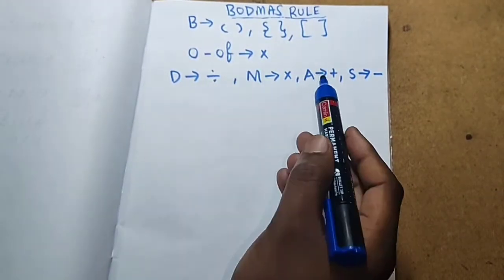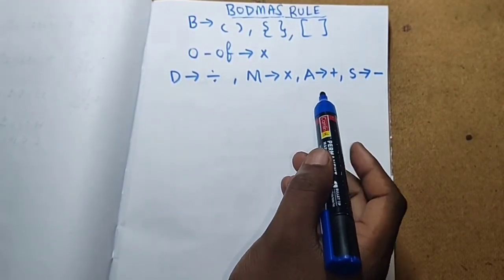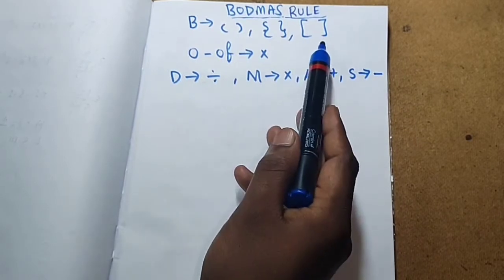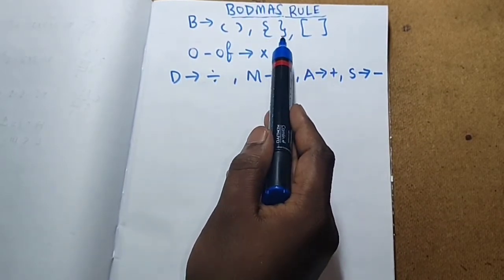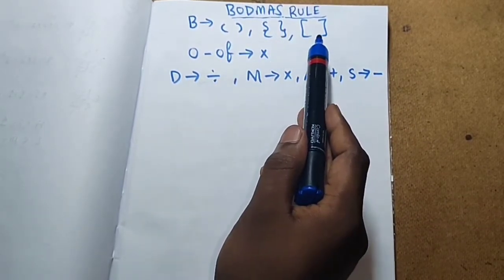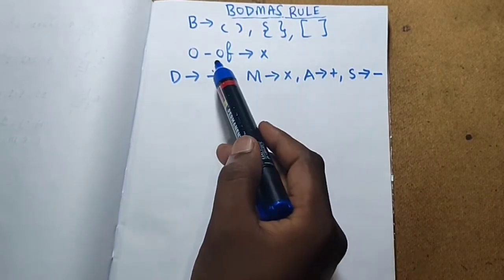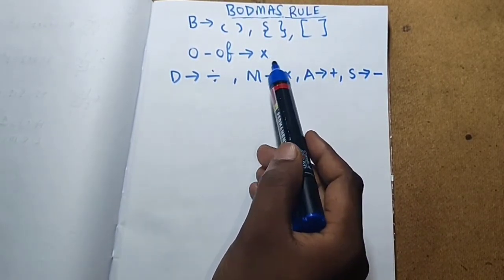BODMAS rule. Previous class we have already discussed. B is brackets. Parenthesis, flower brackets or braces, square brackets. Parenthesis are open brackets. O is nothing but multiplication.